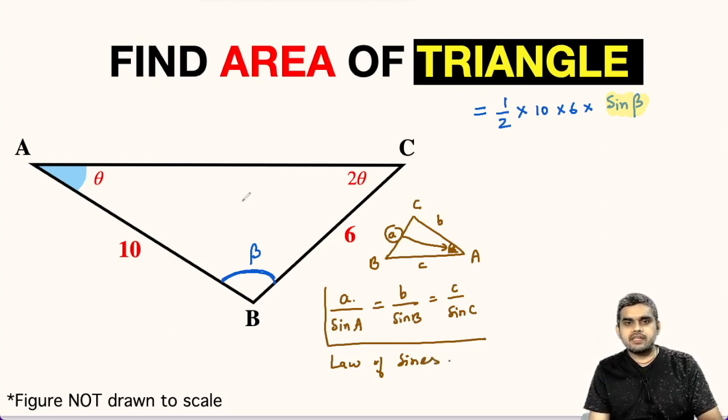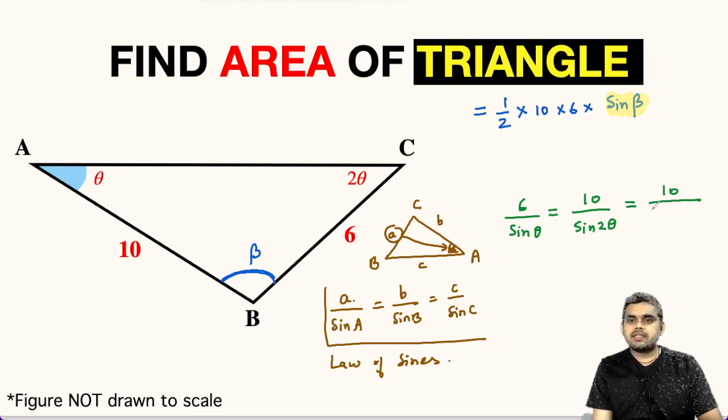Let us apply law of sines in triangle ABC which is given in the figure. This will give us 6 divided by sine theta, since opposite to 6 is theta, equals 10 opposite to 2 theta, so we can write 10 divided by sine of 2 theta. This can be further written as 10 divided by 2 times sine theta cos theta.